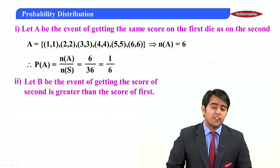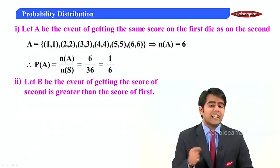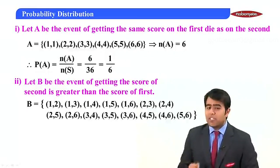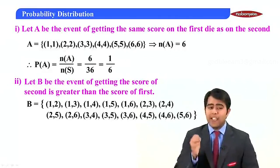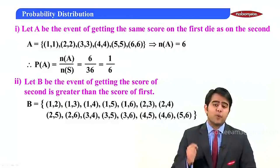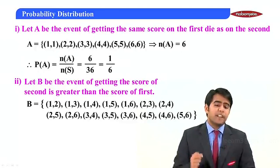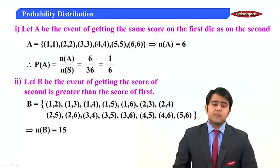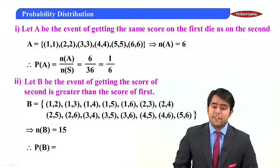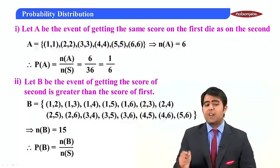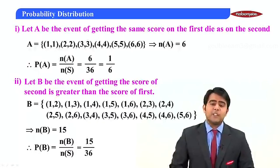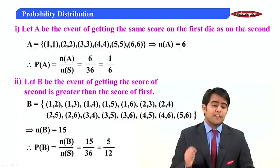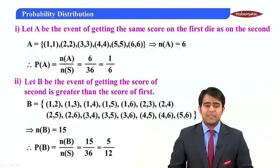For the second part, let B be the event that the score on the second die is greater than the score on the first. The sample space for B includes: (1,2), (1,3), (1,4), (1,5), (1,6), (2,3), (2,4), (2,5), (3,4), (3,5), (3,6), (4,5), (4,6), (5,6), giving n(B) = 15. Therefore, P(B) = 15/36 = 5/12.